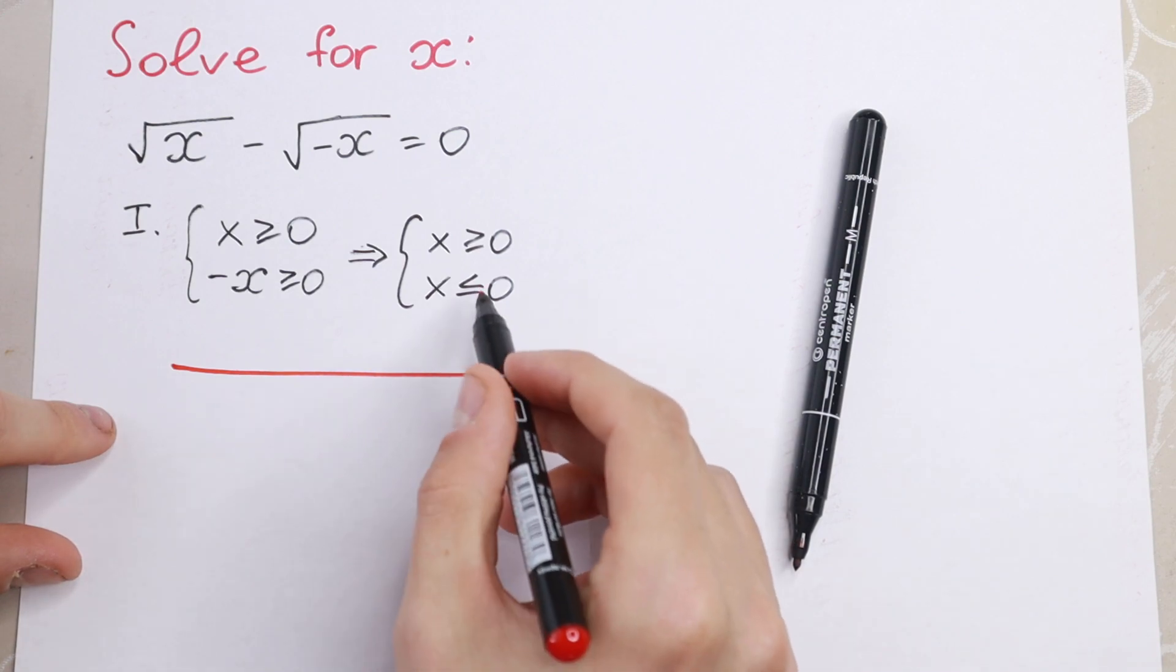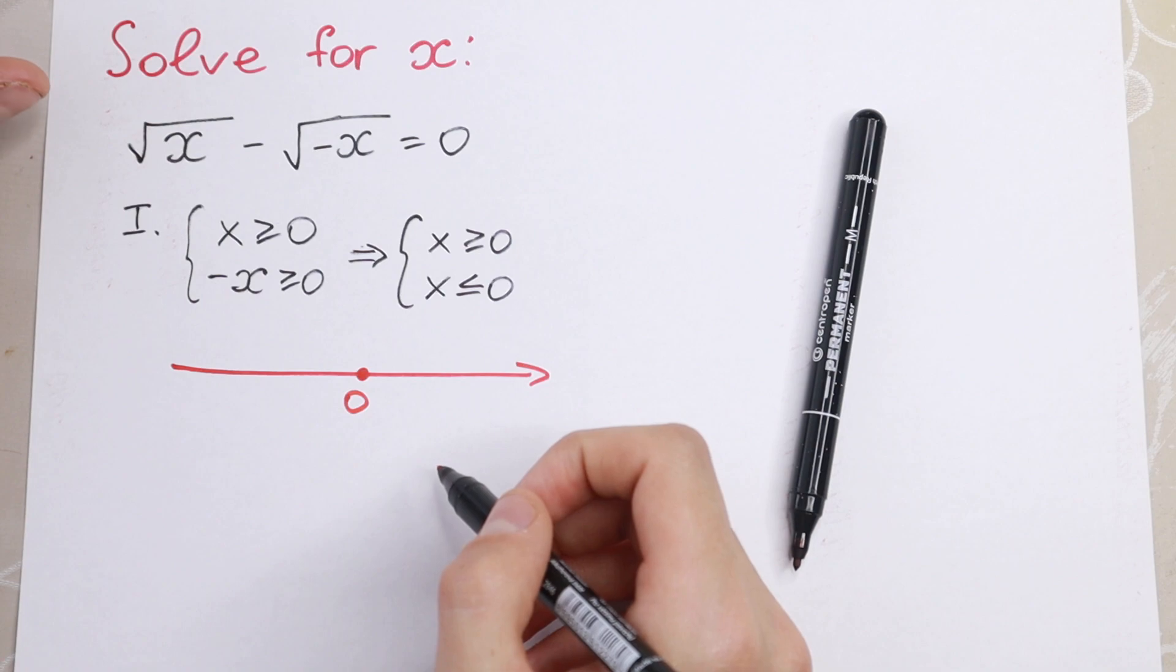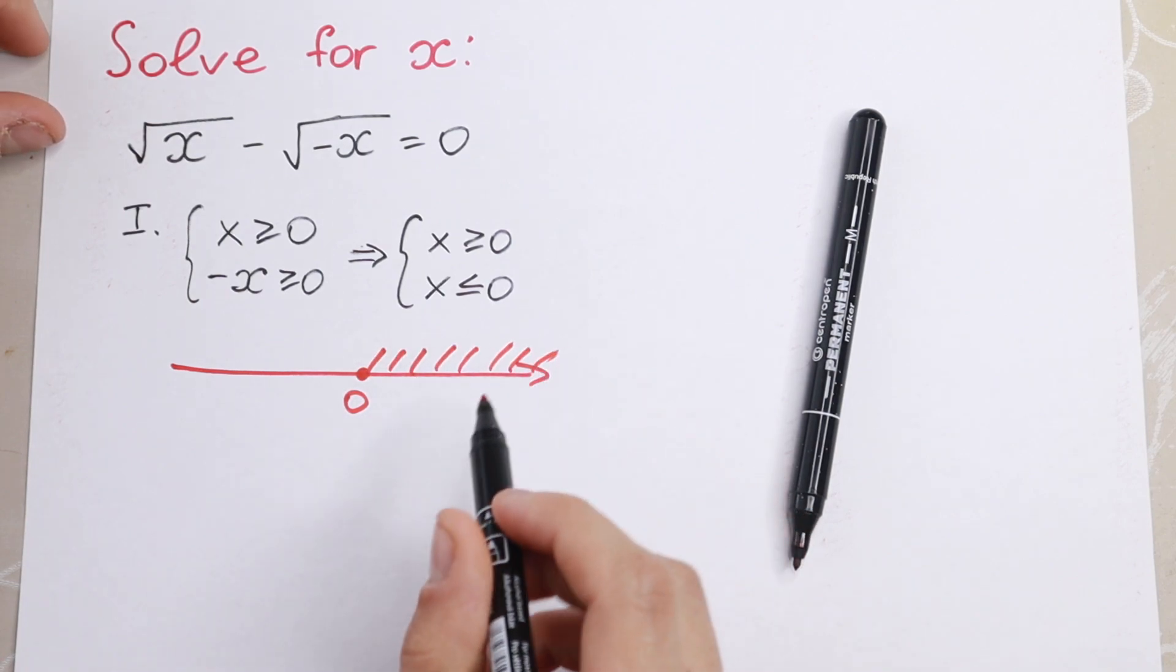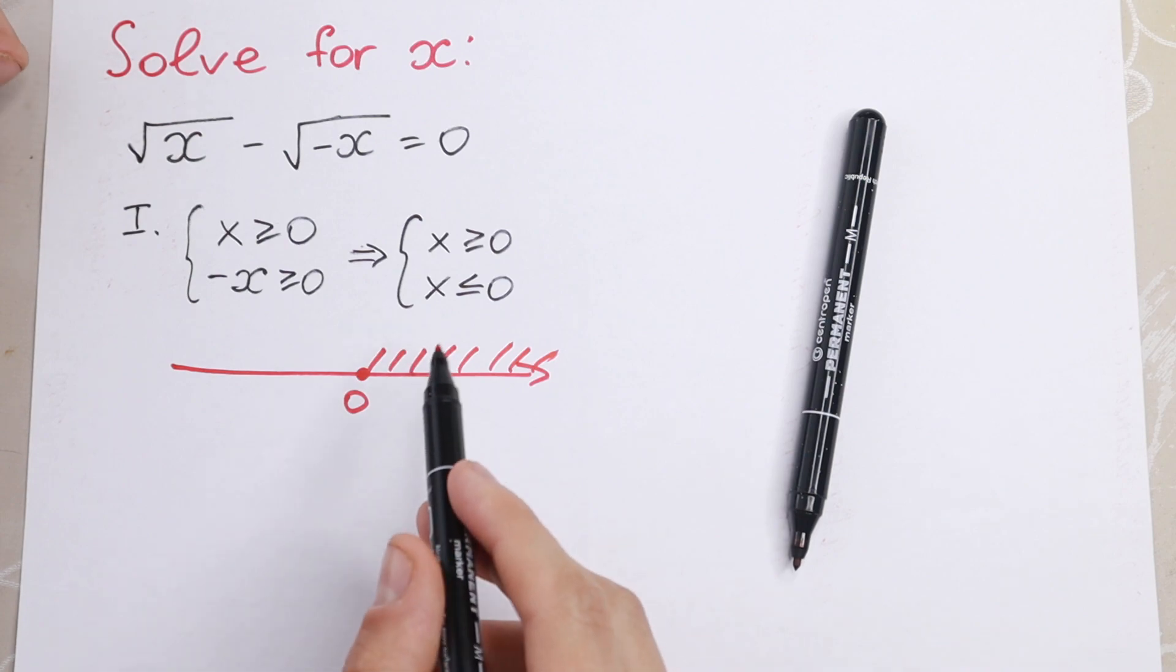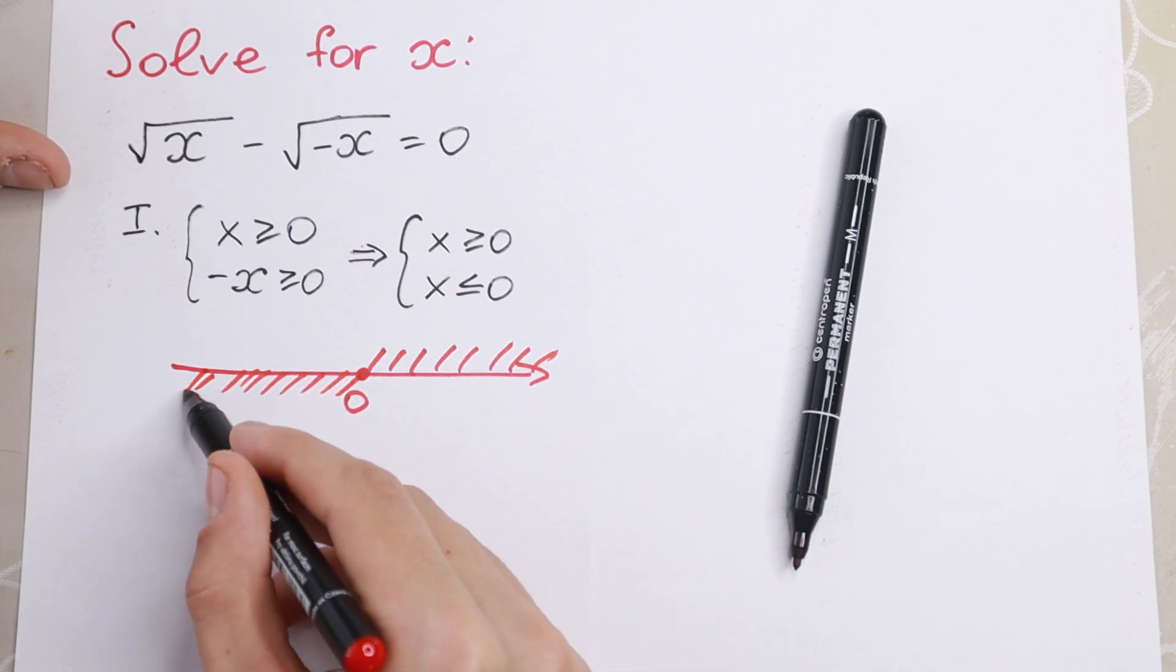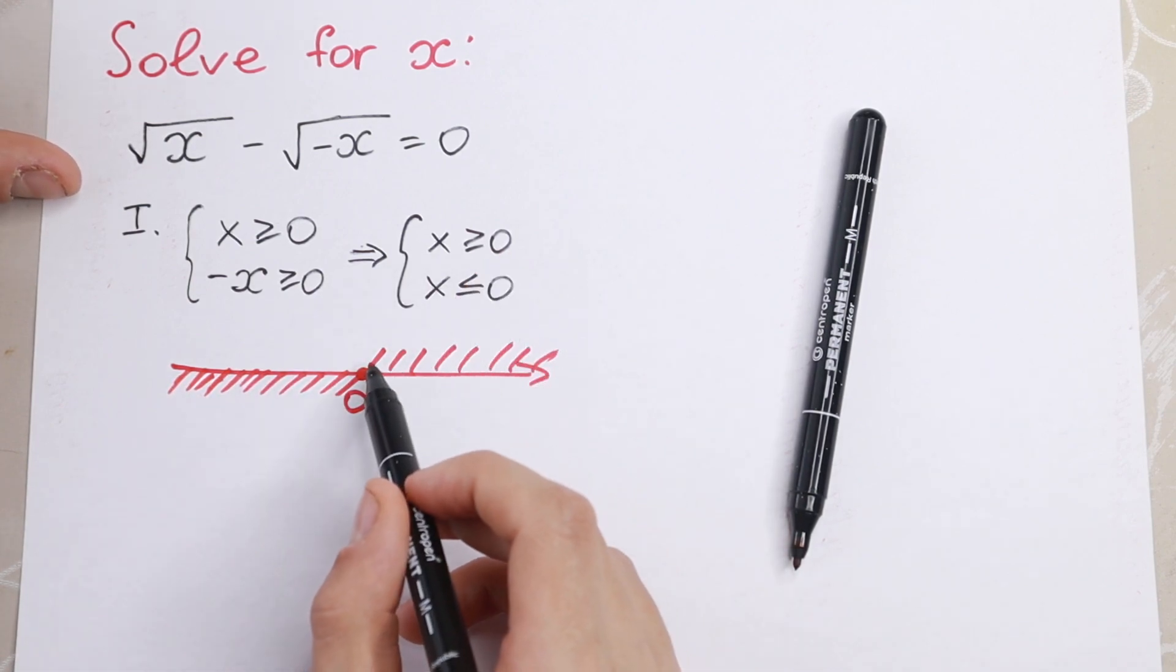So take a look, I write this. So we have 0. The first equation is good when x is greater or equal to 0. And the second one is good when x is less than 0 or equal to 0 as well. So as you can see, our lines intersect only in one point.